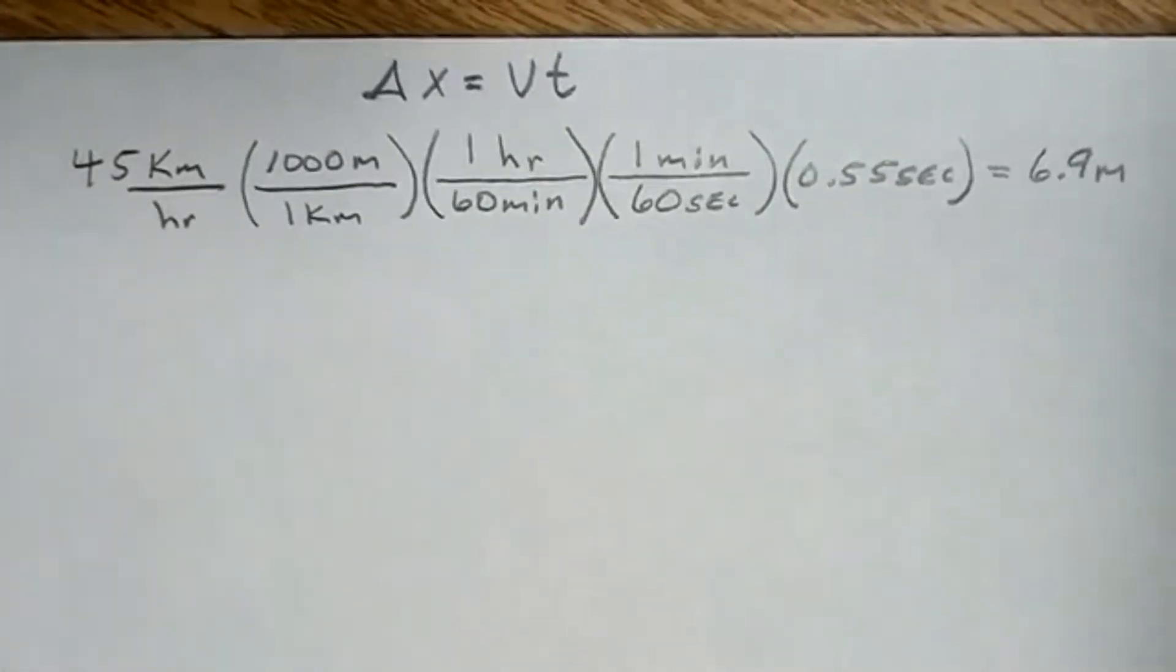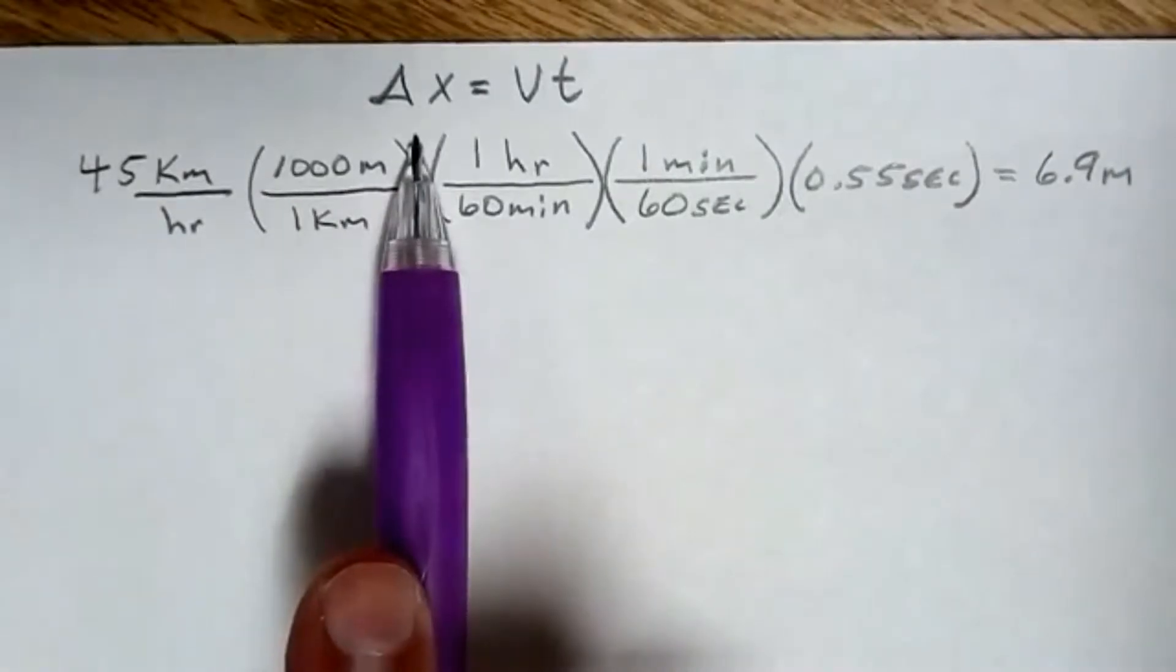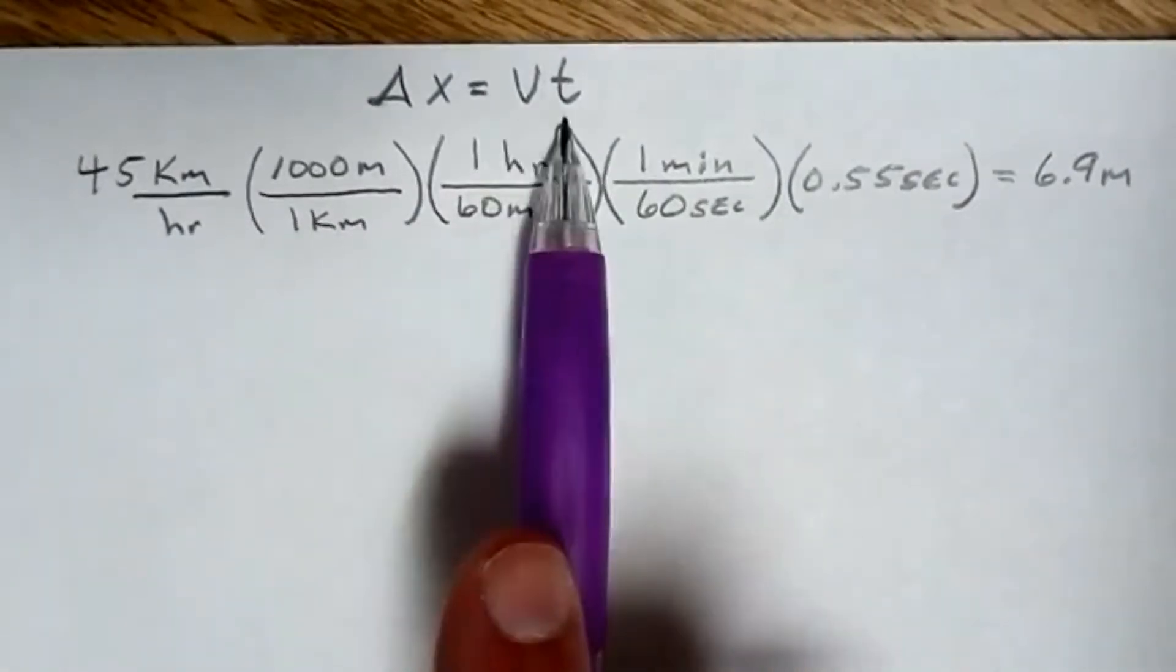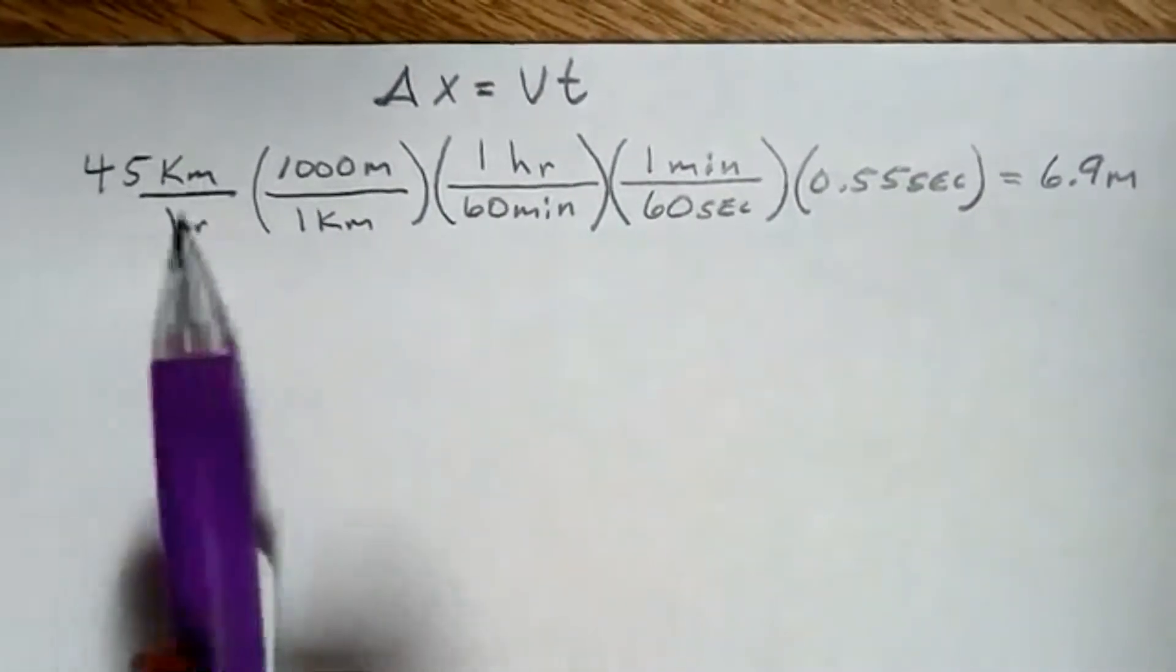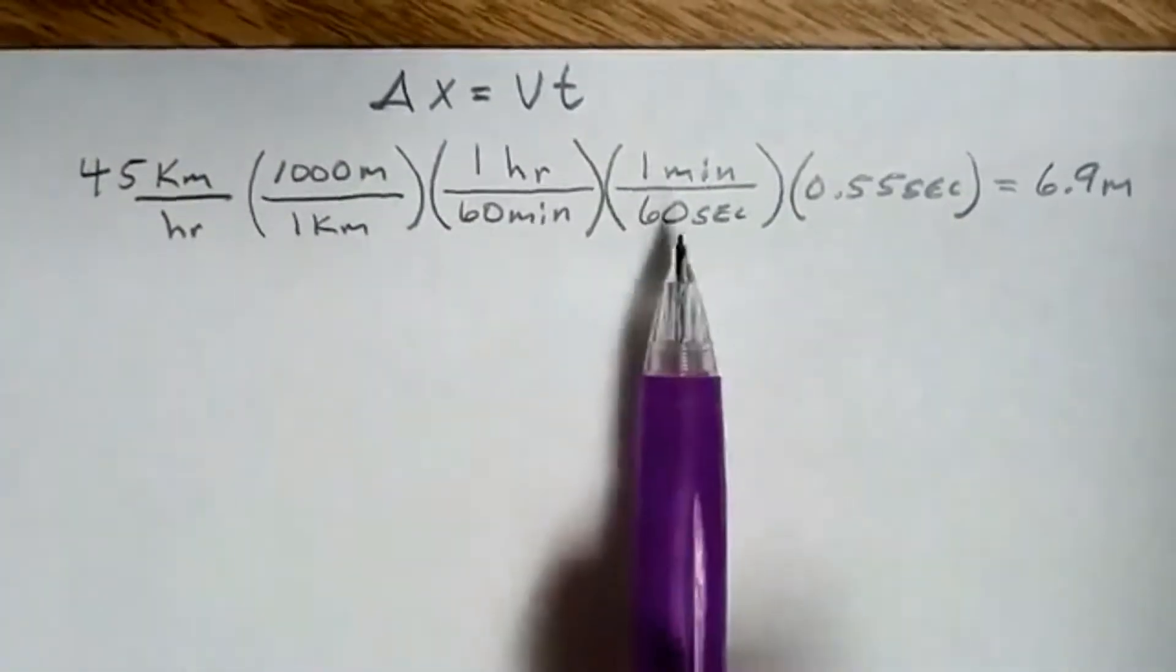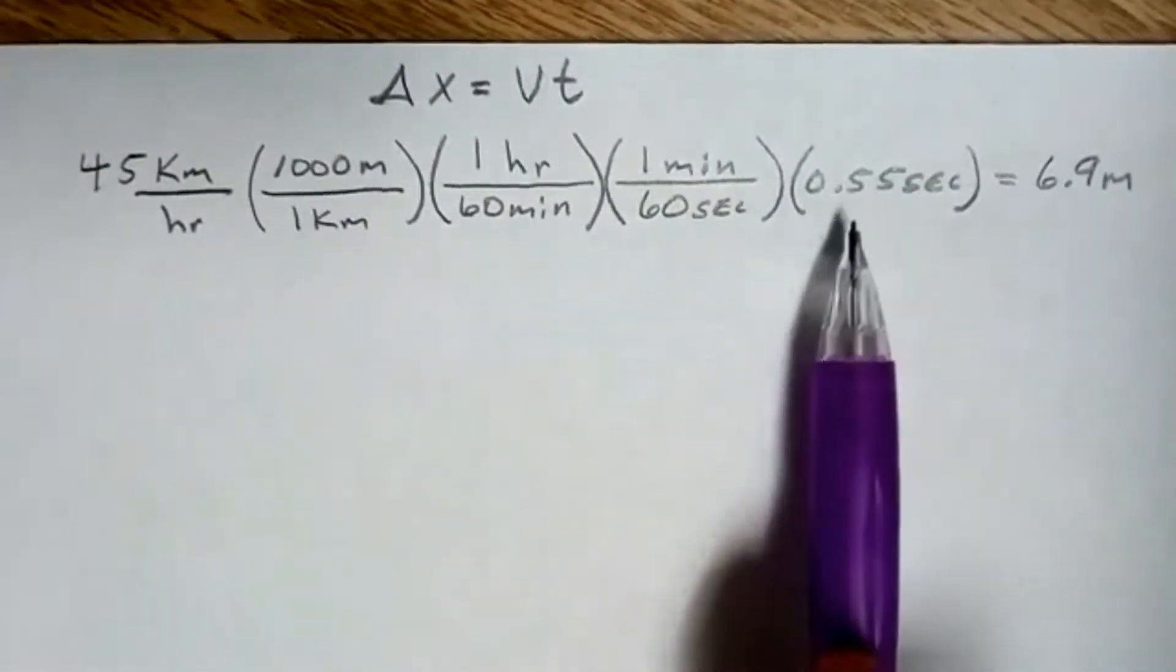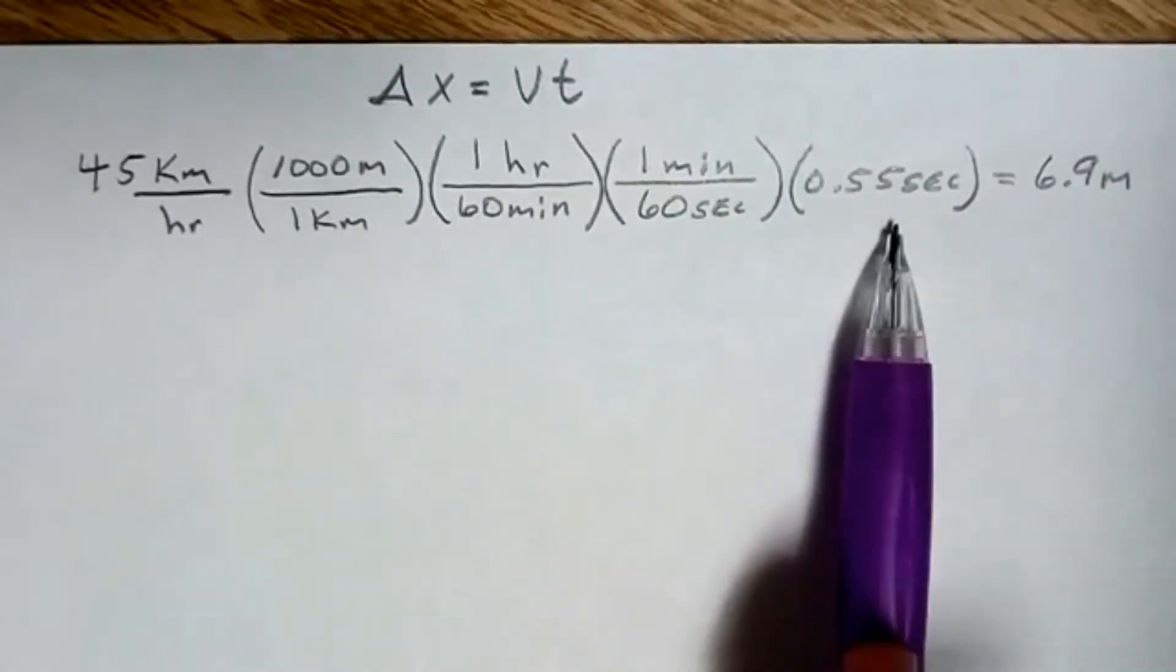So I have a little problem here where we have the distance equation, which is Δx = vt (distance equals velocity times time). I'm going to take the velocity of 45 kilometers per hour and convert that to meters per second so that this reaction time, let's say to stop a car at 0.55 seconds,